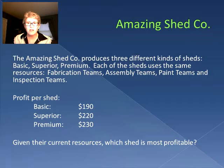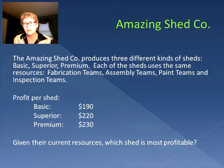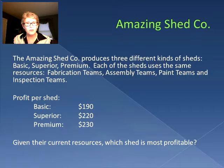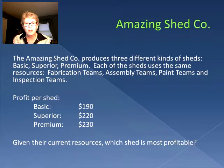Each of the sheds uses the same resources: fabrication teams, assembly teams, paint teams, and inspection teams. The profit per shed is $190 for a basic, $220 for a superior, and $230 for a premium.